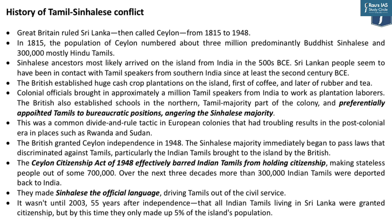I'll give you a brief history of where Tamil-Sinhalese hostility began. Sri Lanka was a British colony — Britain came in 1815 and left in 1948; back then Sri Lanka was called Ceylon. When the British came in 1815, Sri Lanka predominantly had Buddhist Sinhalese population numbering around 3 million and Tamils numbering around 3 lakh — so 90% Sinhalese and 10% Tamil. The ancestors of the present Sinhalese population most likely came from southern India around 500 BC, and there is documentation of contact between Sinhalese and Tamil speakers from South India from the 2nd century BC.